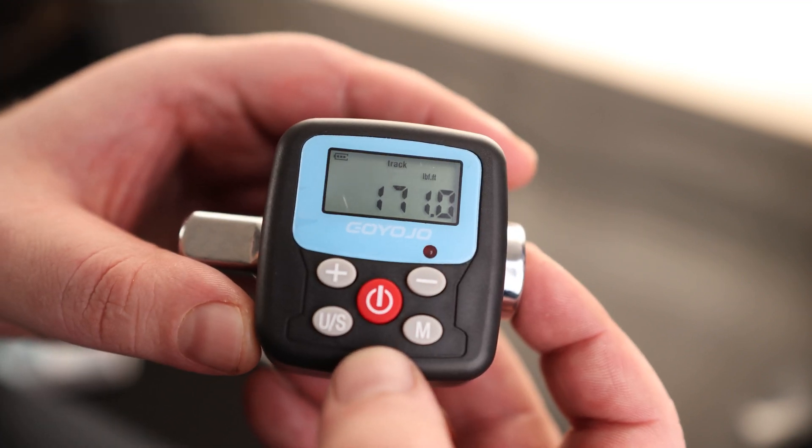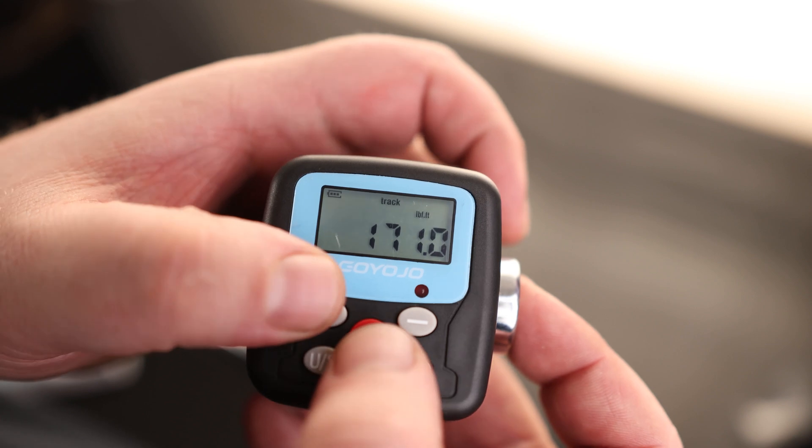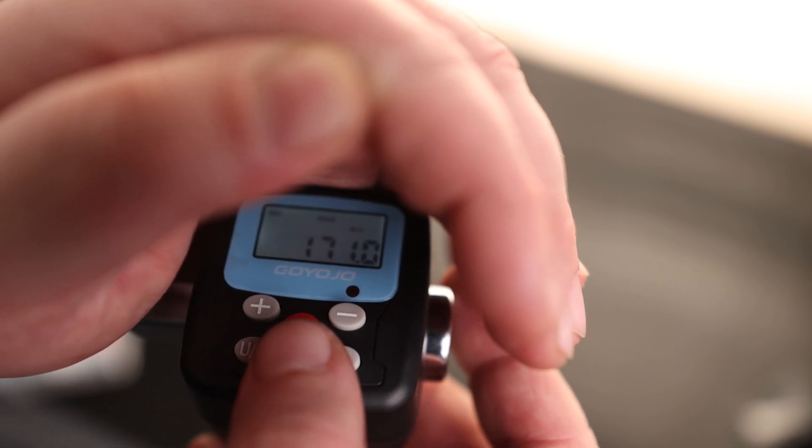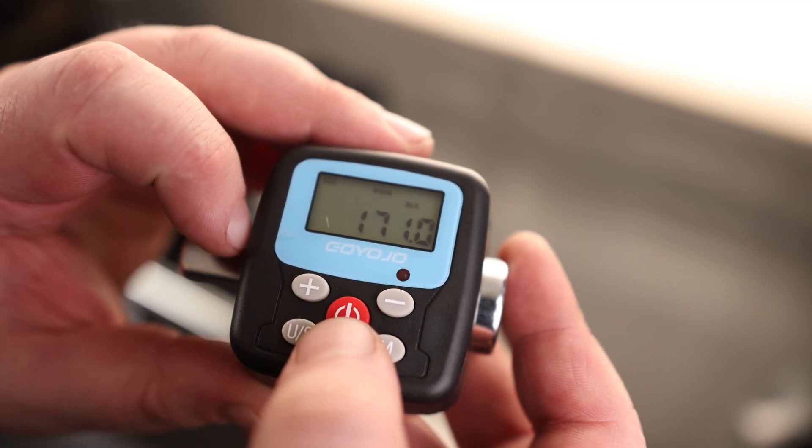Now, this actually has a hidden feature. It actually has a backlight. For that, we have to hit the power and we have to hit the plus. Now, you can see we actually have a backlight. If we need to use this in a dim environment, we can do that. If we want to turn it off, we can save power.